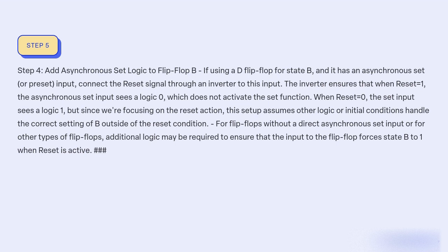Step 4: Add asynchronous set logic to flip-flop B. If using a D flip-flop for state B and it has an asynchronous set or preset input, connect the reset signal through an inverter to this input. The inverter ensures that when reset=1, the asynchronous set input sees a logic 0, which does not activate the set function. When reset=0, the set input sees a logic 1, but since we're focusing on the reset action, this setup assumes other logic or initial conditions handle the correct setting of B outside of the reset condition. For flip-flops without a direct asynchronous set input or for other types of flip-flops, additional logic may be required to ensure that the input to the flip-flop forces state B to 1 when reset is active.